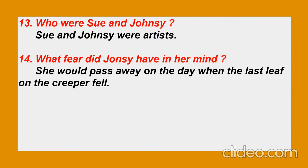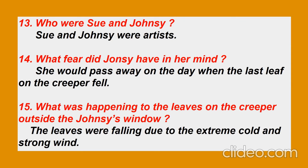These were the 12 textbook questions; the remaining are compiled from different sources for extra questions. Question thirteen: Who were Sue and Johnsy? Sue and Johnsy were artists. Question fourteen: What fear did Johnsy have in her mind? She believed she would pass away on the day when the last leaf on the creeper fell. Question fifteen: What was happening to the leaves on the creeper outside Johnsy's house? The leaves were falling due to the extreme cold and strong wind.